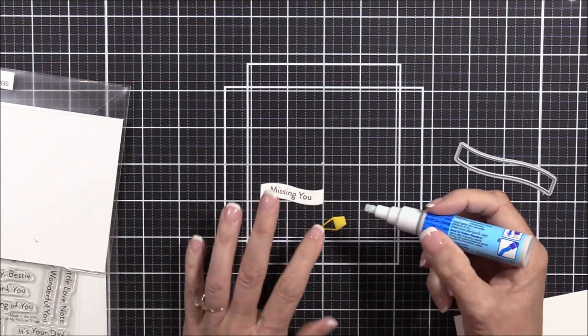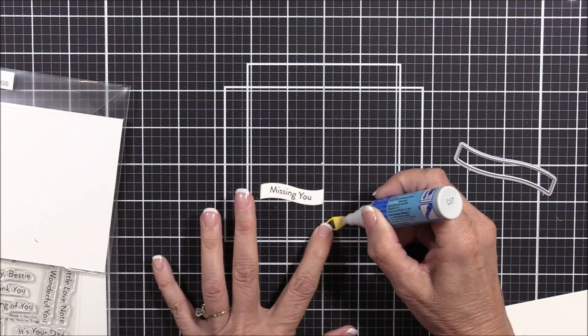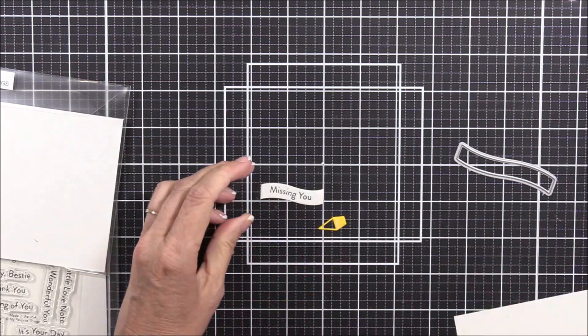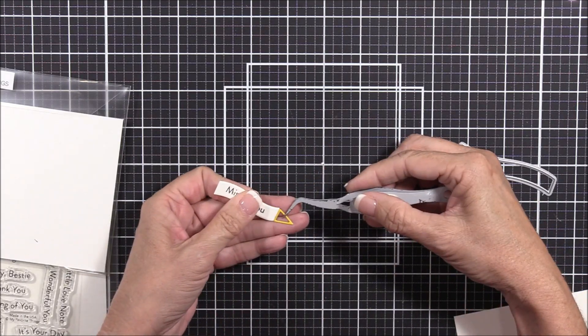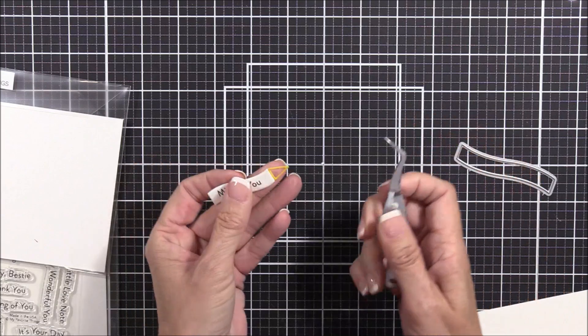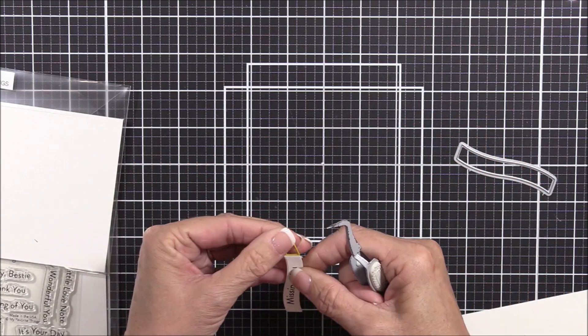I also die cut the tab for the banner from Lemon Drop card stock. I'll secure the tab to the banner with my liquid glue pen. And, as a quick side note, nicely manicured nails look great, but they're not super functional for dealing with tiny die cuts.